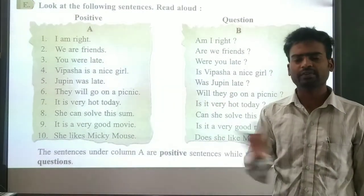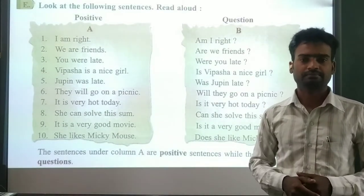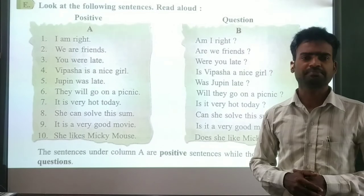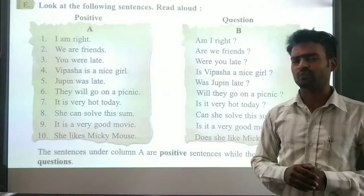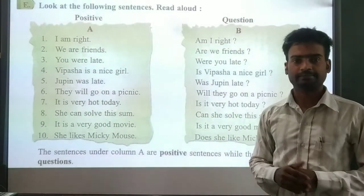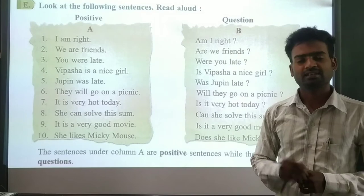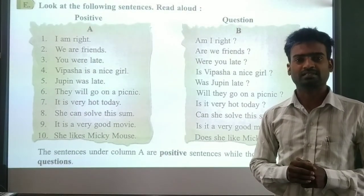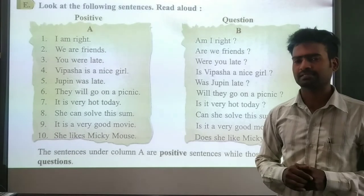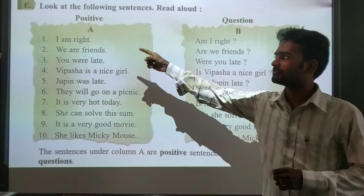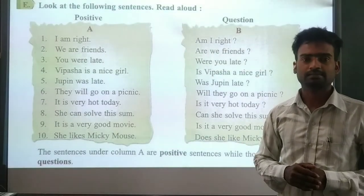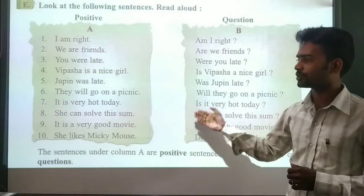So far we were learning about how to make positive and negative sentences. But when we want to ask questions to somebody, how do we ask? Very simple - don't think it's complicated. This is a positive sentence: 'I am right.' To make a question, the auxiliary verbs - there are plenty of auxiliary verbs. Read the sentence: 'I am right.' We need to find the auxiliary verb in the sentence.